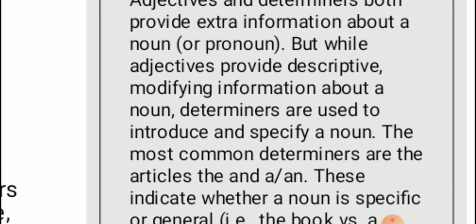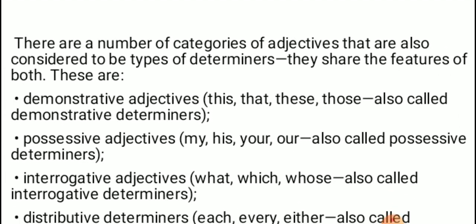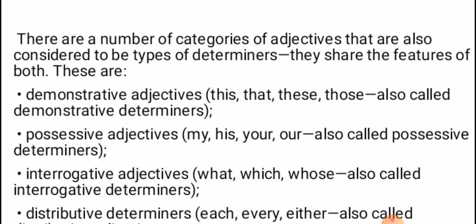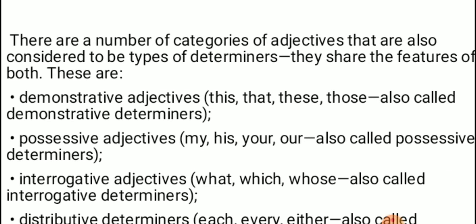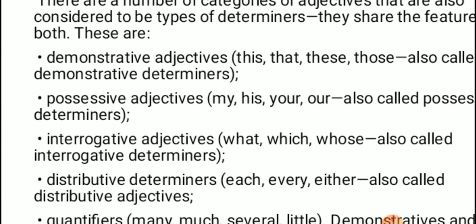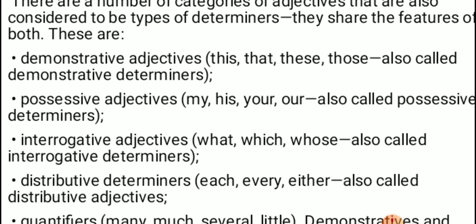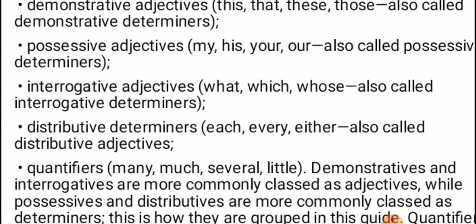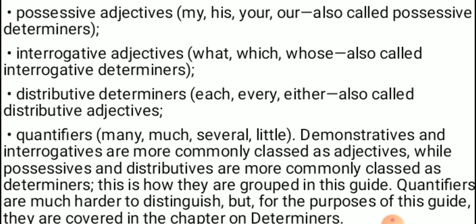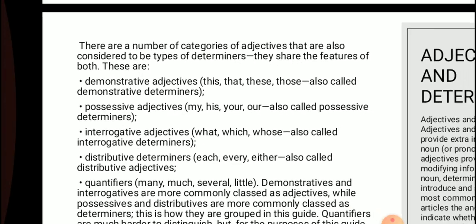There are a number of categories of adjectives that are also considered types of determinants. These words have a dual function — they can be used as adjectives and also as determiners. Demonstrative adjectives — this, that, these, and those — can function as both demonstrative adjectives and demonstrative determinants. Possessive adjectives such as my, his, your, and ours can be used as both possessive adjectives and possessive determinants. Interrogative adjectives such as what, which, and whose can be used as interrogative determinants and adjectives. Distributive determinants — each, every, either — can also be used as distributive adjectives.